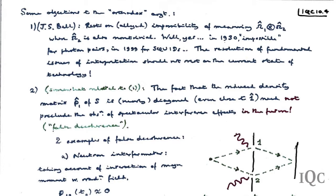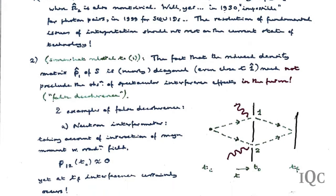The first example is the neutron interferometer. A neutron proceeds from a source to a silicon crystal screen acting as two slits—the beams are deflected, recombine, and you get the standard interference pattern. This is well verified experimentally.